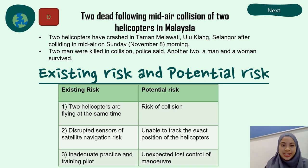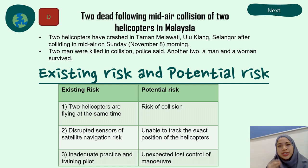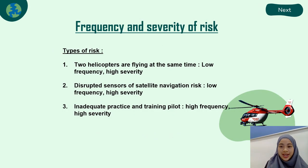Hello and Assalamu'alaikum. My name is Khanani Zanita. I will present on the incident involving a collision of two helicopters in Malaysia, which happened in Tabang Merawati Selama. The first existing risk is that the two helicopters were flying at the same time, leading to the potential risk of collision. The second risk is restricted sensors or satellite navigation, which leads to inability to track the exact position of the helicopters. The third risk is inadequate practice and training of pilots, leading to unexpected loss of control during maneuvering. We need to identify the frequency and severity of risk to provide the best risk management technique.